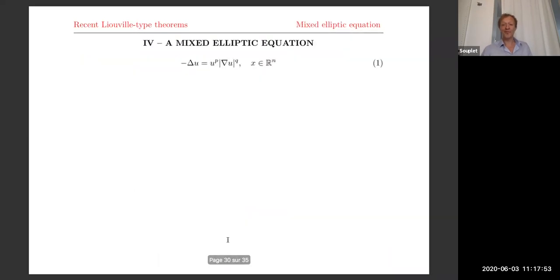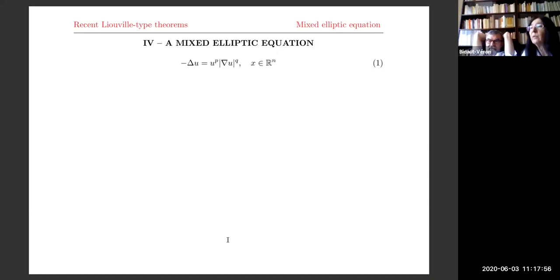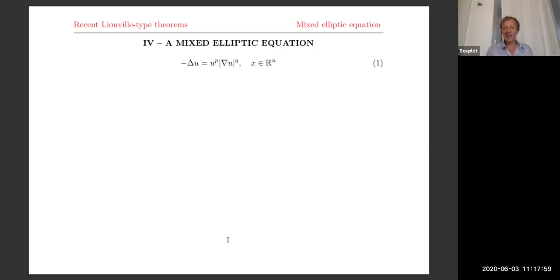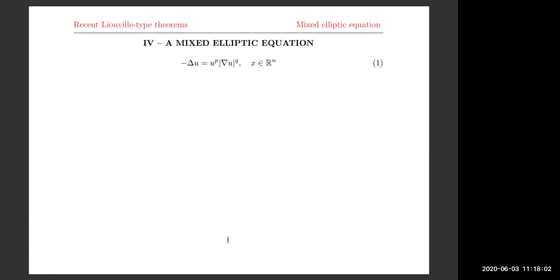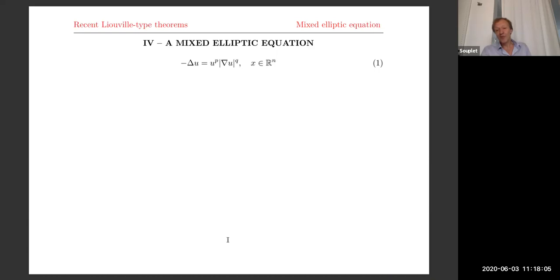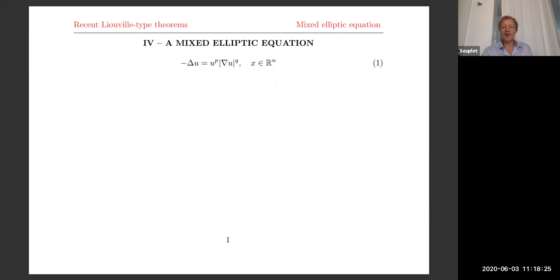Now I move to the fourth problem, which is a kind of mixture between the Lane-Emden and the Hamilton-Jacobi — it's a product nonlinearity. Maybe it's more purely aesthetic because it's not clear if this equation is related to a physical application. But it's very interesting to understand this kind of equation when you already know a lot about the pure Lane-Emden case and the pure Hamilton-Jacobi case — it's natural to ask what happens when you mix the two.